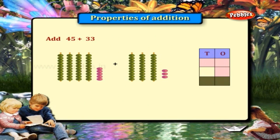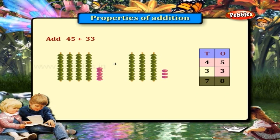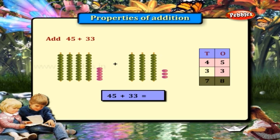One more problem. 45 plus 33. The numbers in the ones place are 5 and 3. What is 5 plus 3? Yes, it is 8. Write 8 in the ones place. Now the numbers in the tens place are 4 and 3. When you add 4 and 3 we get 7. Write 7 in the tens place. So the answer is 45 plus 33 is equal to 78.